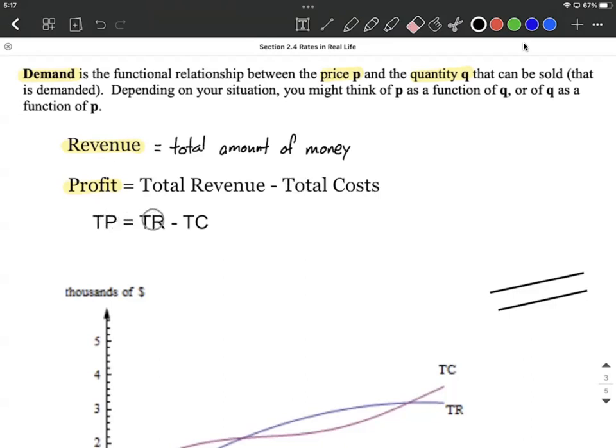And our book uses total profit, TP is equal to total revenue minus total costs. So you got to be a little bit careful as you're setting these up, but it's usually not a horrible concept.